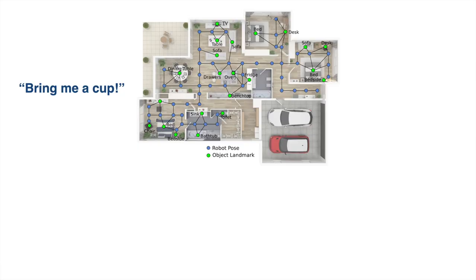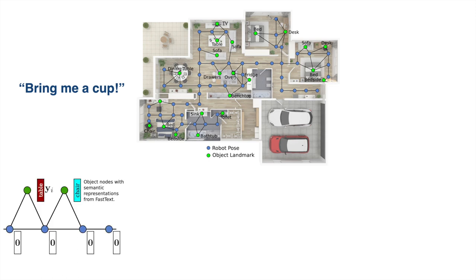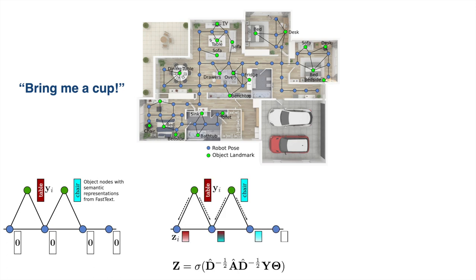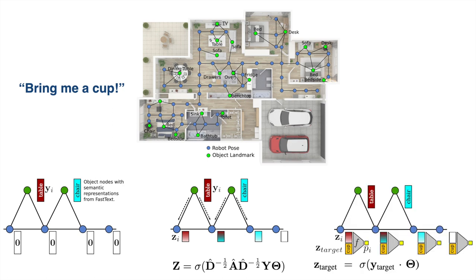Let's put these ingredients all together. Given a graph map of the environment and word vector representations for all of the object landmarks, we apply a graph convolutional operation to propagate information from the landmarks into the neighboring pose nodes. We then concatenate the updated representation of the pose nodes with a representation of the target object, and pass this concatenation through a small fully connected network consisting of just three layers. The output is a scalar representing the probability the policy assigns to each pose node of being the next target the robot should navigate to.